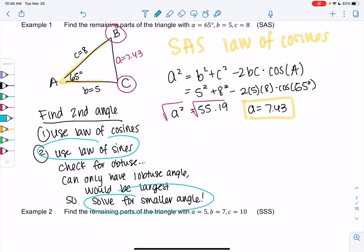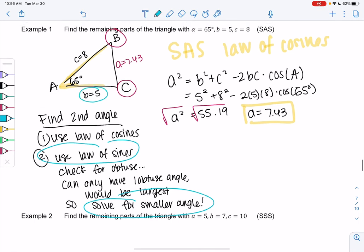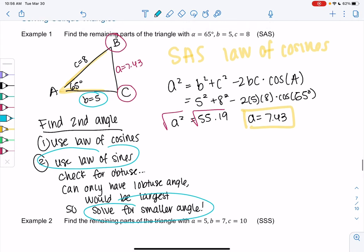If you use law of cosines, you do not have to worry about this. So how do I know which one's smaller? The one with the smaller side.